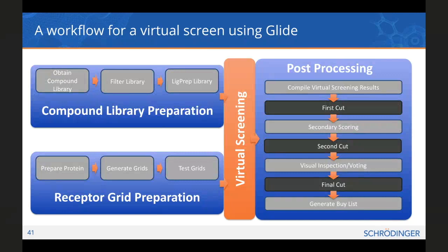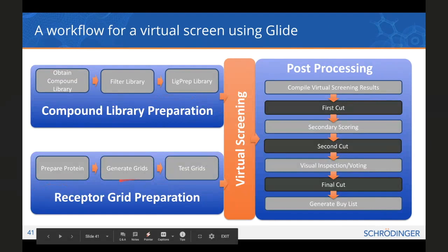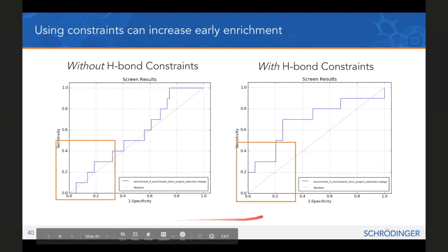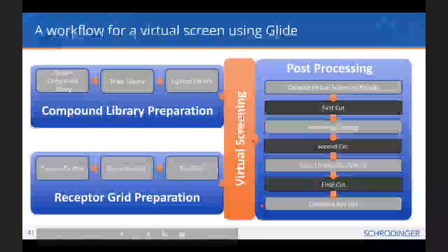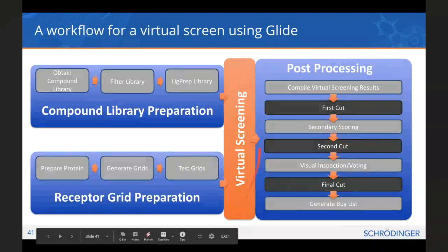An idealized workflow for virtual screening with Glide would be: obtain a compound library, either commercially available or generated using reaction-based or R-group enumeration. Filtering is always faster than screening — if you know a ligand won't be a good drug candidate before it ever sees a receptor, filter it out. Prepare the library. Similarly, prepare your protein, generate grids, and test grids — which means evaluating enrichment by mixing known binders with duds or decoys. Once you're happy with that, bring those two puzzle pieces together in the virtual screen.